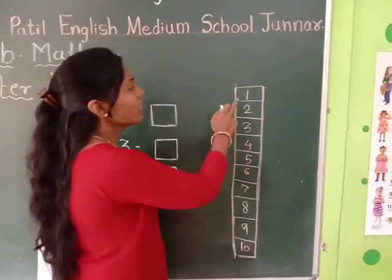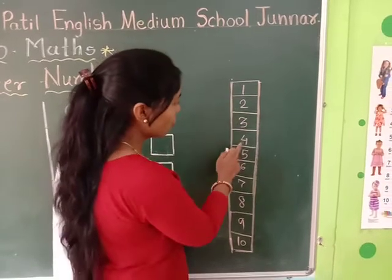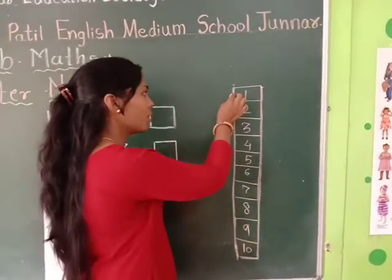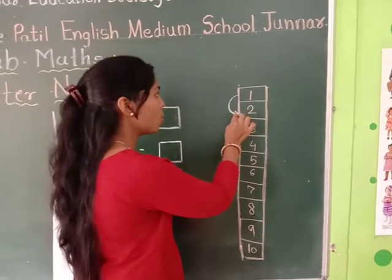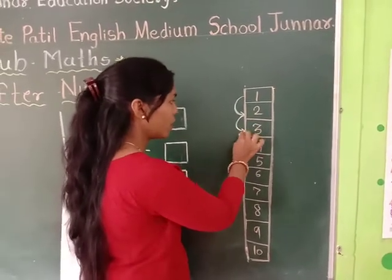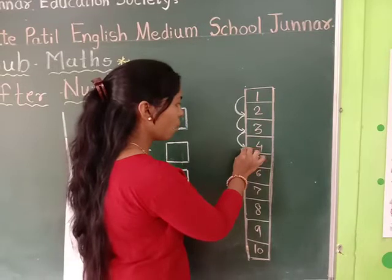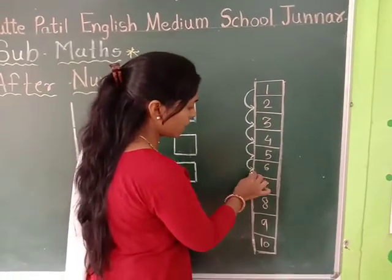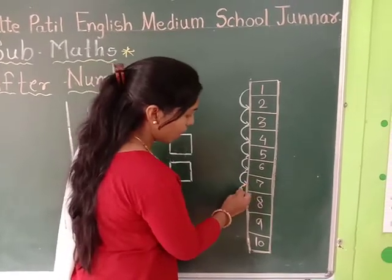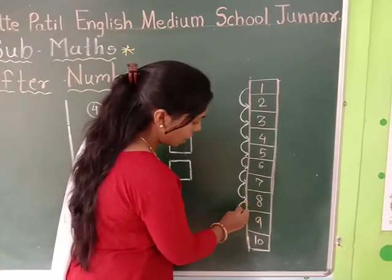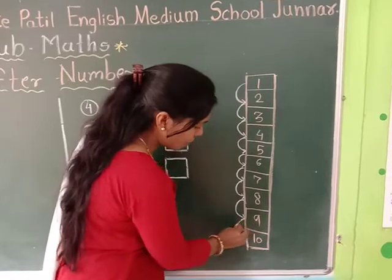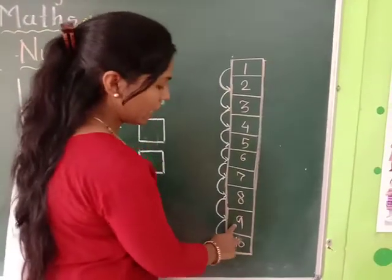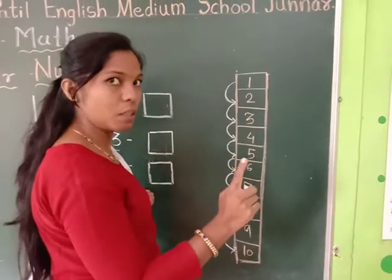So students, here I am writing 1, 2, 3, 4, 5 up to number 10. So after 1 comes 2, after 2 comes 3, after 3 comes 4, after 4 comes 5, after 5 comes 6, after 6 comes 7, after 7 comes 8, after 8 comes 9, and after 9 comes 10. So students, 1 up to number 9 — here are only 1-digit numbers.